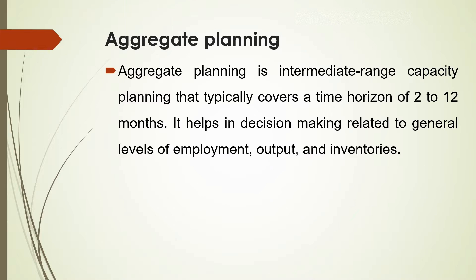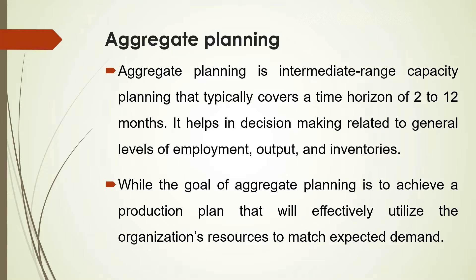Let us quickly review the definition and the goal of aggregate planning. Aggregate planning is intermediate-range capacity planning that typically covers a time horizon of 2 to 12 months. It helps in decision-making related to general levels of employment, output, and inventories. The goal of aggregate planning is to achieve a production plan that will effectively utilize the organization's resources to match expected demand.